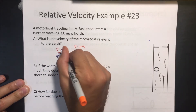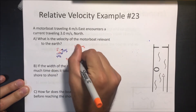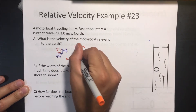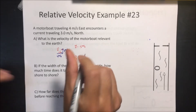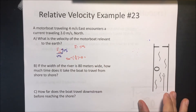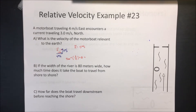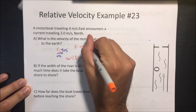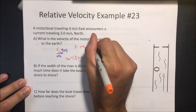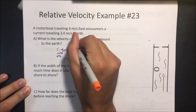We can find the angle using inverse tangent: tan⁻¹(3/4) = theta. Putting that into our calculators gives us 36.87 degrees. So the answer is 5 meters per second at 36.87 degrees.